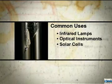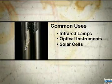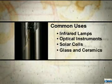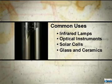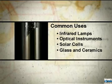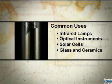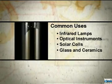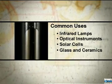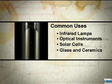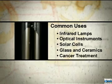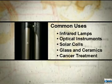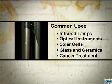Cesium compounds are used to make glass and ceramics. And cesium-137, a radioactive waste product of nuclear reactors, is sometimes used to kill certain kinds of cancer cells.